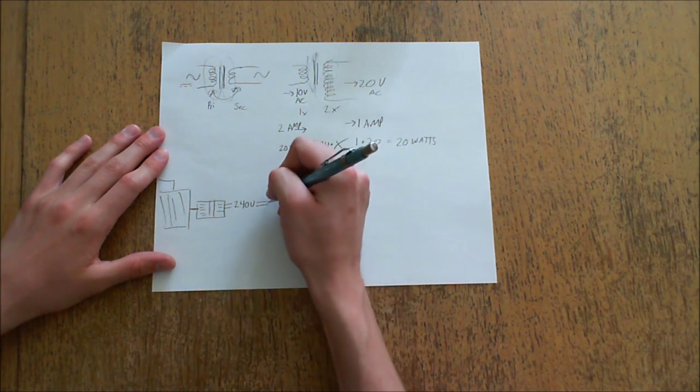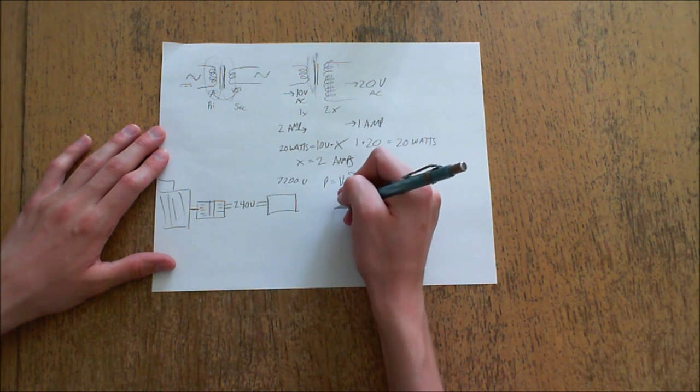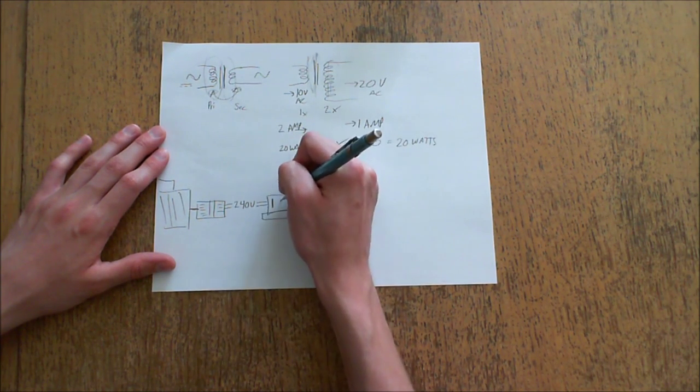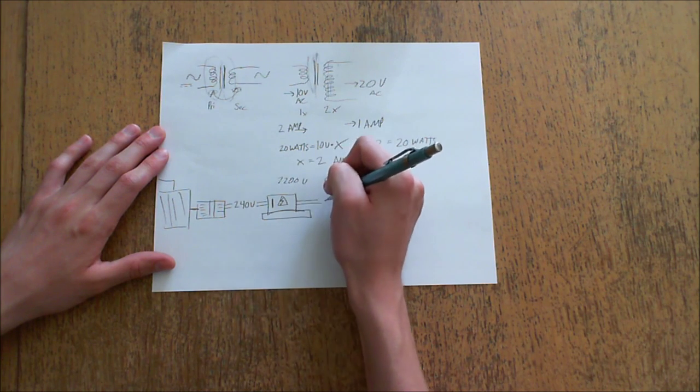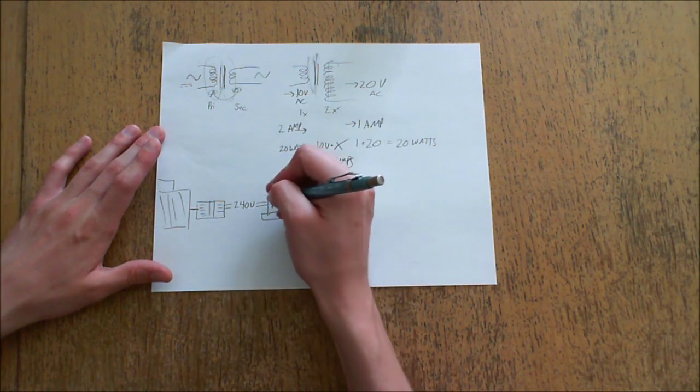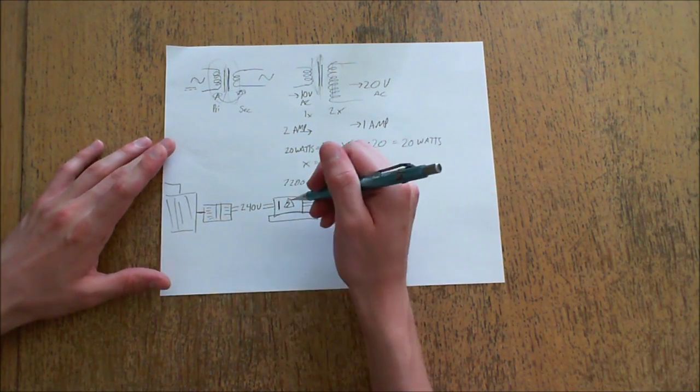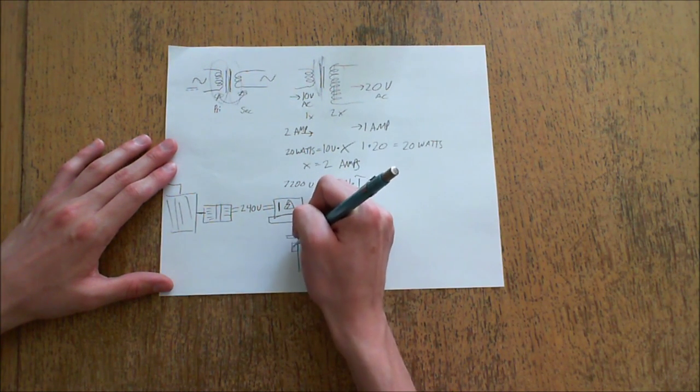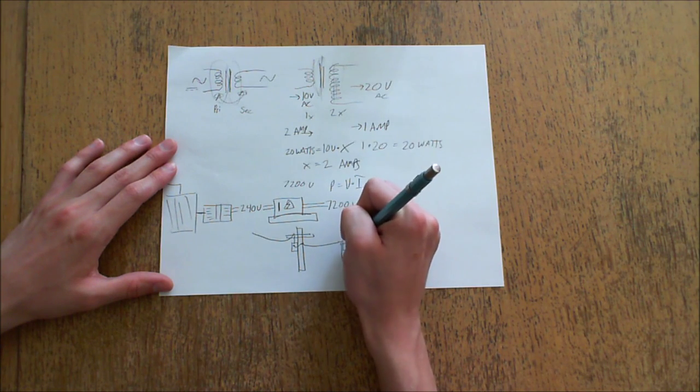So you want to send this 240 volts into a transformer. What you'd probably be more familiar with is the big pad-mounted thing that sits on a concrete pad, has a little handle on it, and probably says do not enter. This essentially changes voltage up and down. So you might then have 7200 volts coming out. Of course, this is a gross simplification. Usually there's three phases, and usually the transformers and substations don't look like this, but this is what you might be familiar with for a transformer.